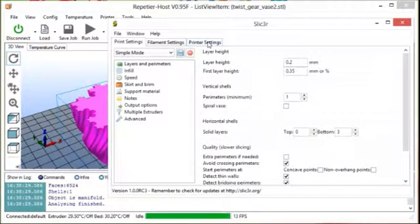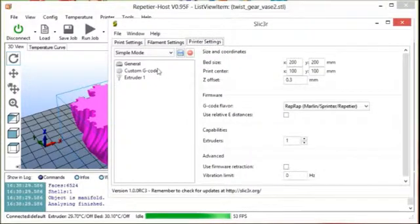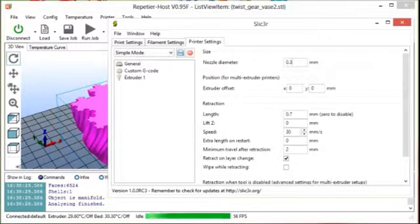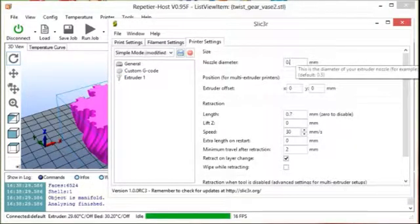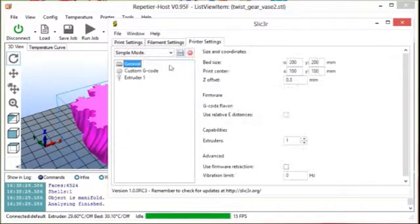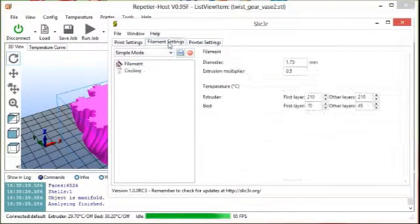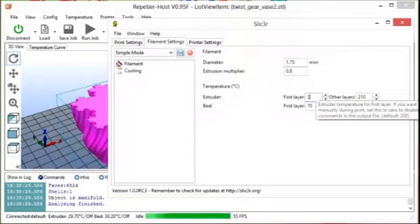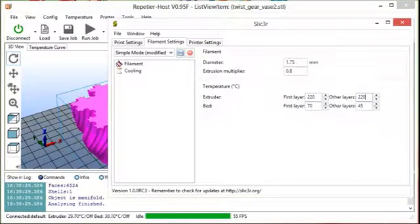First go to printer settings. Then select Extruder 1. Now change nozzle diameter to 0.4 or whichever nozzle you are using. Now go to filament settings and change layer temperatures. If you are upgrading from J-head hotend, then add 10 degrees to your usual extruder temperatures for both first layer and other layers.